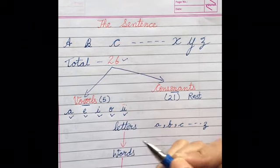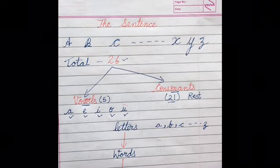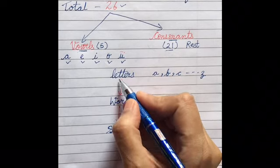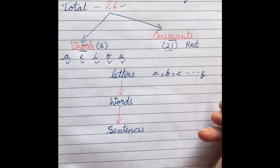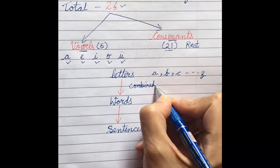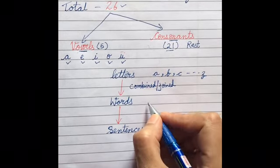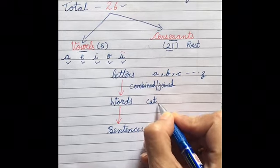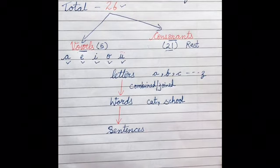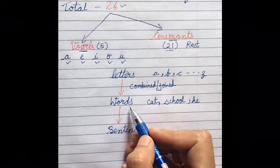These are the 5 vowels and the rest 21 are consonants. Now, letters A to Z are combined or joined to make words. For example, 'cat', 'school'. So what we are doing is combining different letters to form words.